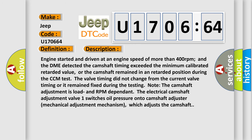Engine started and driven at an engine speed of more than 400 revolutions per minute and the DME detected the camshaft timing exceeded the minimum calibrated retarded value, or the camshaft remained in a retarded position during the CCM test. The valve timing did not change from the current valve timing or it remained fixed during the testing. Note: The camshaft adjustment is load and RPM dependent. The electrical camshaft adjustment valve 1 switches oil pressure onto camshaft adjuster mechanical adjustment mechanism, which adjusts the camshaft.